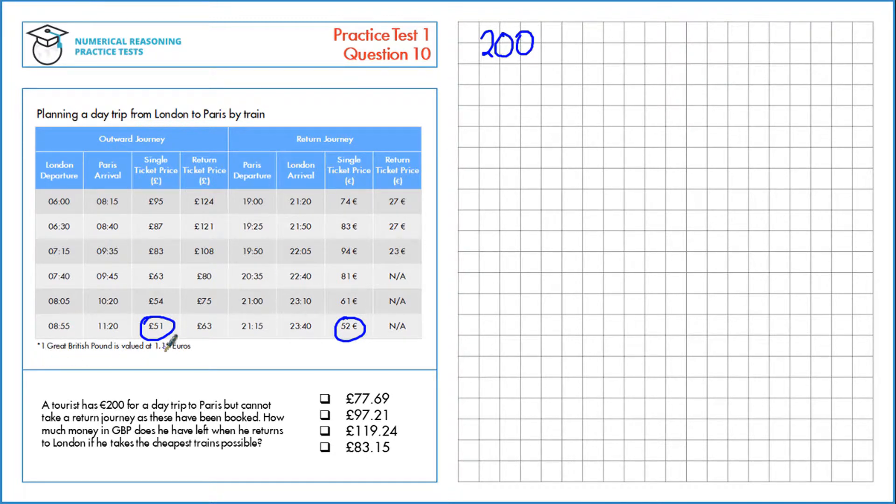So 200 euros converts into pounds. We know one pound is 1.15 euros. So we'll divide by 1.15 to get the value in pounds, which is £173.91.